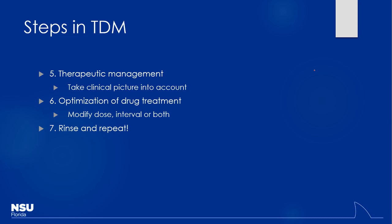Once you take the patient holistically into account, you can look at optimization of drug treatment — typically modifying the dose, the interval, or in some cases both. I like to do one or the other, because if you do both at the same time, your tendency to over- or undershoot is greater. For example, if I change the dose from 500 to 250 and extend the interval from Q12 to Q24, I'm more likely to undershoot the target levels.